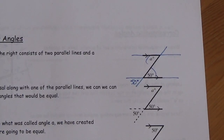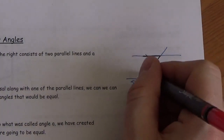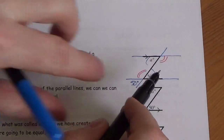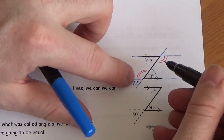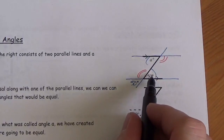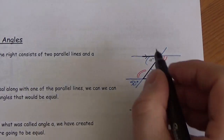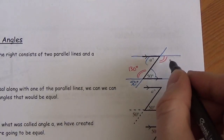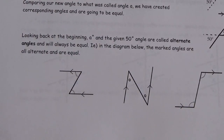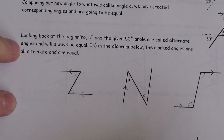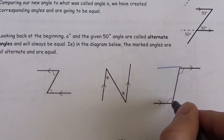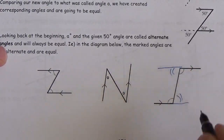These two angles here are also equal to each other by exactly the same rule — they won't be the same as the first pair, but they'll be equal to each other. I can figure out what they are: if this is 50°, these two angles add up to 180°, making this 130°. Then I know this angle is also 130 degrees. So there are two different pairs of alternate interior angles, each pair equal within itself.